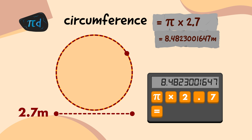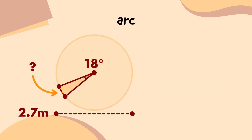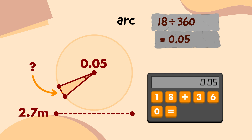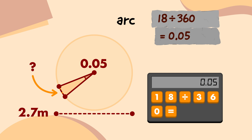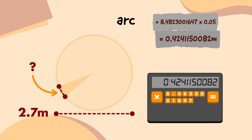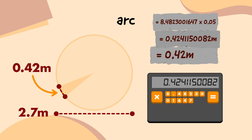Now I know the circumference, I can work out the arc length. The central angle of this portion is 18 degrees, so I'll divide 18 by 360. On my calculator, I'm going to type 18, press the divide button, type 360, and press the equals button, which tells me that this part of the circle is 0.05 times as big as the whole circle. Then, I'm going to multiply that by the circumference, which gives me 0.4241150082. That means this arc length is 0.42 metres long.